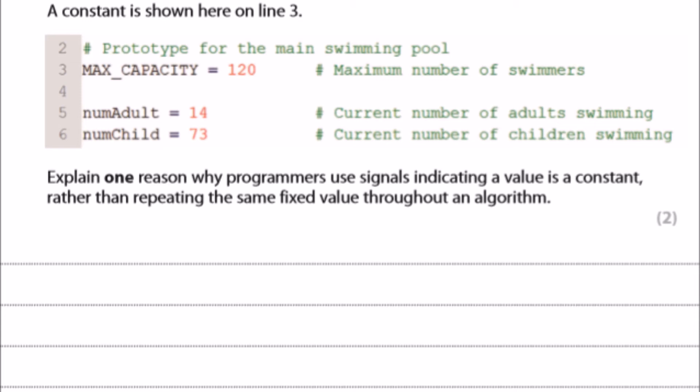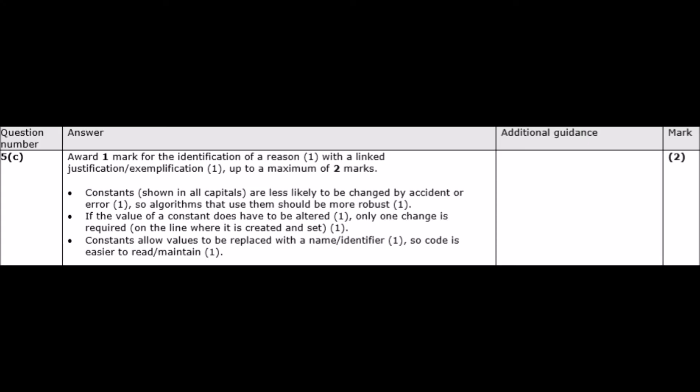It says: programmers can use all capitals to show that a value is a constant — which is what we just did in our code. Here we have line number 3: MAX_CAPACITY assigned 120. That is a constant because it's all in capitals. Line 5 has num_adult assigned 14, which is a variable. The question asks: explain one reason why programmers use signals indicating a value as a constant rather than repeating the same fixed value throughout an algorithm. The official mark scheme answer: constants are shown in all capitals because they are separate from variables and are less likely to be changed by accident or error — that's one mark.